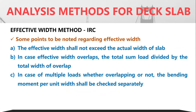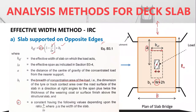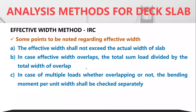Some important points regarding the effective width: the effective width shall not exceed the actual width B of the slab. If the calculated B_effective becomes greater than B, we should limit the value of B_effective to B itself. In case the effective widths of multiple wheels overlap, the total sum of loads divided by the total width of the overlap should be considered.